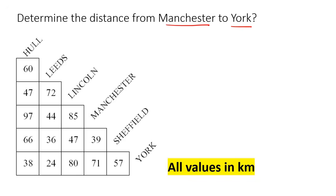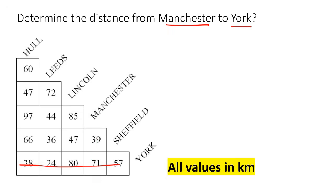All you do is go to Manchester and to York and make them connect. With Manchester, you could go left or go down. With York, you can only go across — it can't go up or down. With Manchester, you go down so that they intersect. If you just went left with Manchester, it wouldn't intersect. So you go down, and where they intersect, that is your answer: 71 kilometers.